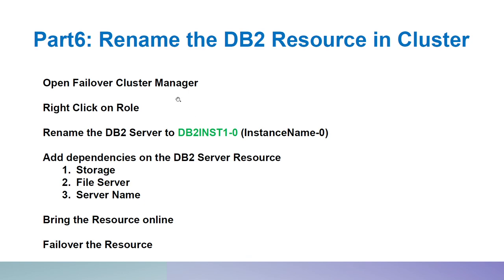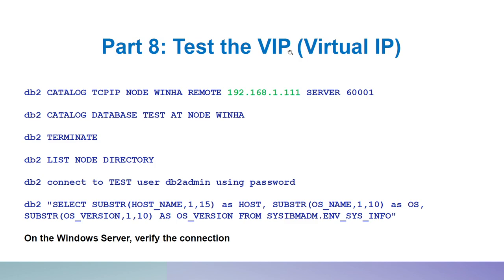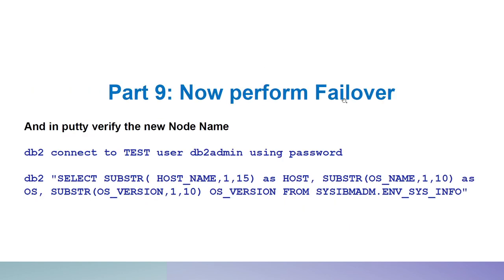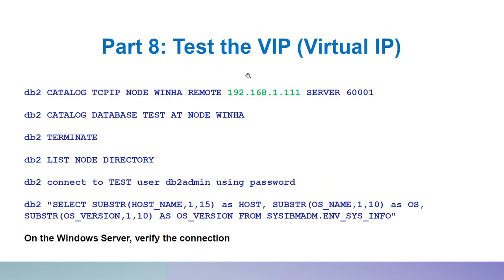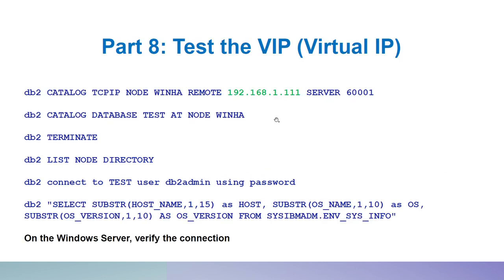The next part — and this is very important — is to rename the DB2 server to DB2INST1, then add some dependencies. Once all of that is done, your cluster activity is complete. The remaining steps are creating the database normally and testing the virtual IP and failover. Parts 8 and 9 are optional testing steps to verify HA works.